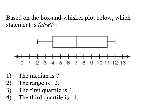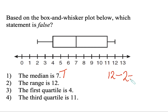The next question, based on the box and whisker plot below: which statement is false? The median is 7 — that is true. The range is 12 — we have to calculate the range. We take the largest value, which is 12, and subtract the smallest, which is 2. Our range is 10, which means answer number 2, the range is 12, is false.